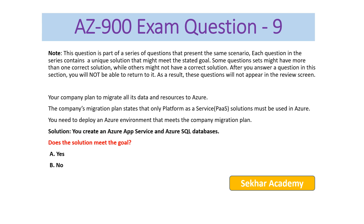AZ-900 exam question number nine. Your company plans to migrate all its data and resources to Azure using only Platform as a Service solutions. The proposed solution is: you create an Azure App Service and Azure SQL databases. Both Azure App Service and Azure SQL databases come under Platform as a Service. So the solution meets the goal, and the answer is A: Yes.